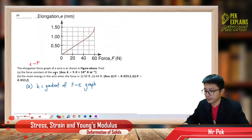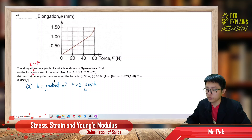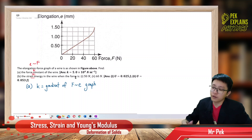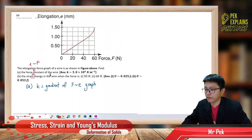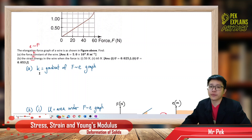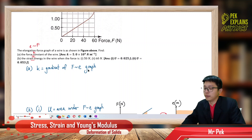Find the force constant of the wire — that's K — and also the strain energy in the wire, which is U, when the force is 50 Newton or 60 Newton. We start off with finding the force constant. The force constant K is actually the gradient of the F-E graph. That means K is F over E.